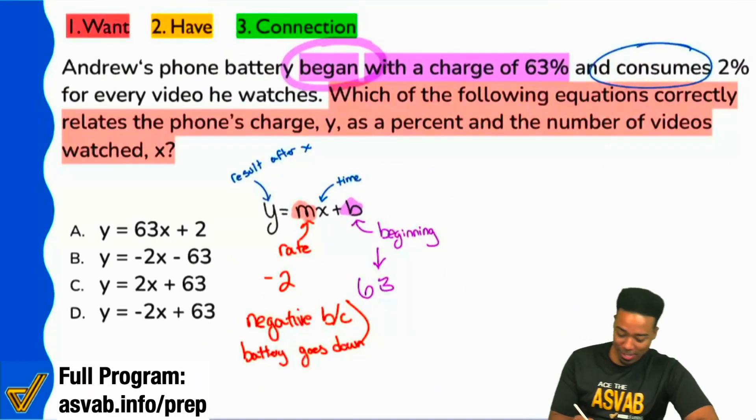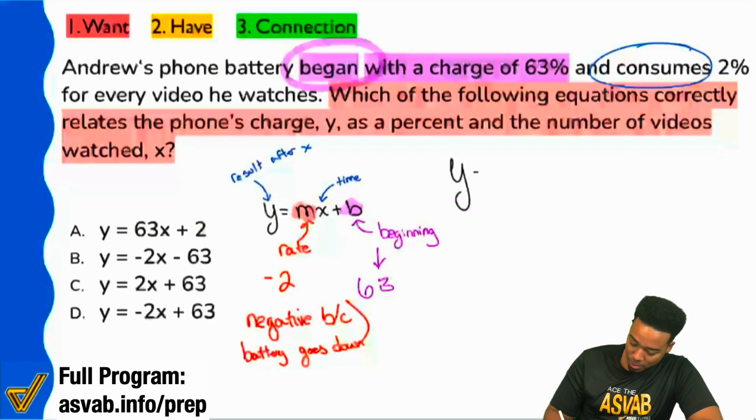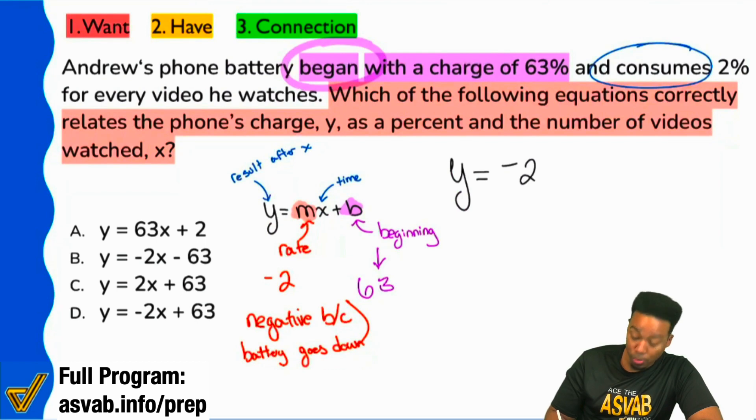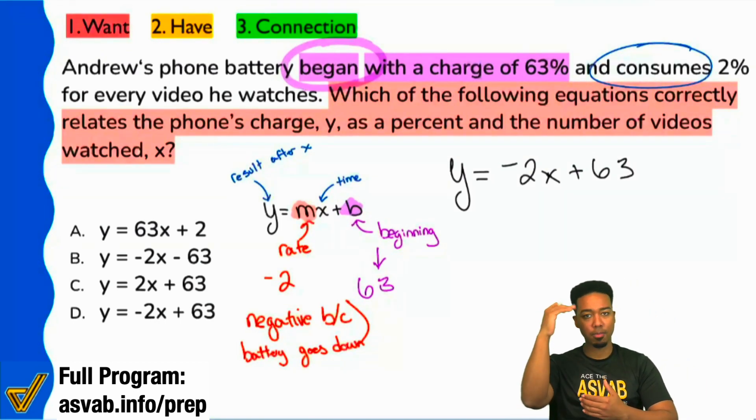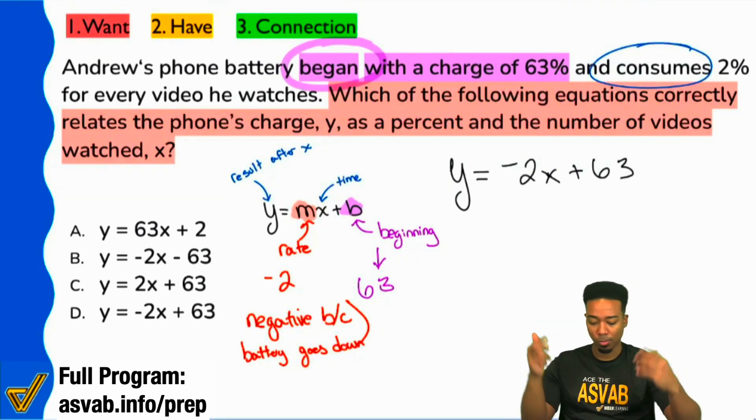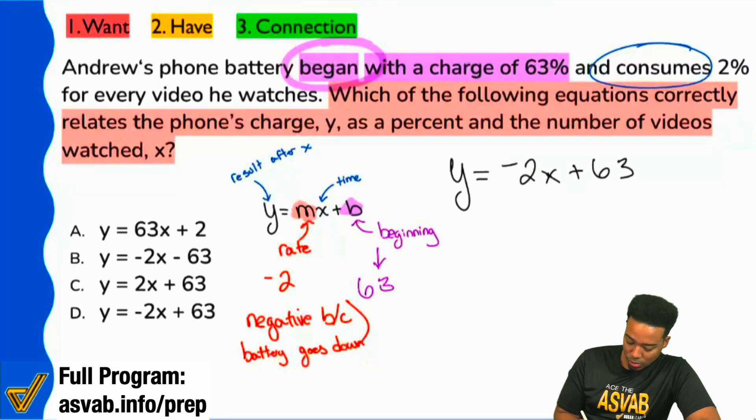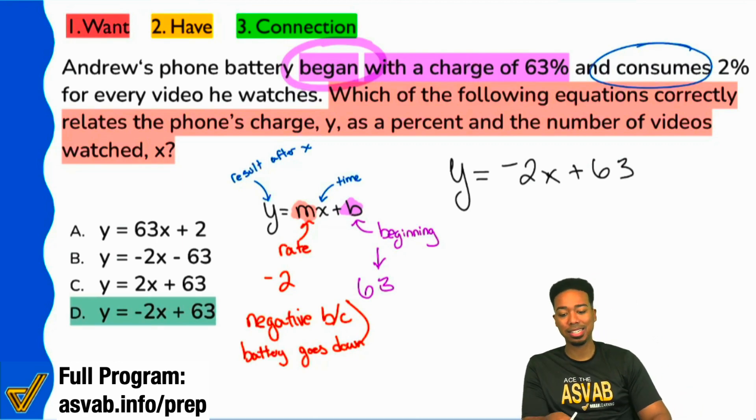If that makes sense, then we're set. Because the final answer is going to be Y equals negative 2. That's the M. You put your X down. And then your B is plus 63. Because you started with a positive 63% on the battery. And it's going to go down. Well, that's it. And that makes our answer D. Negative 2X plus 63.